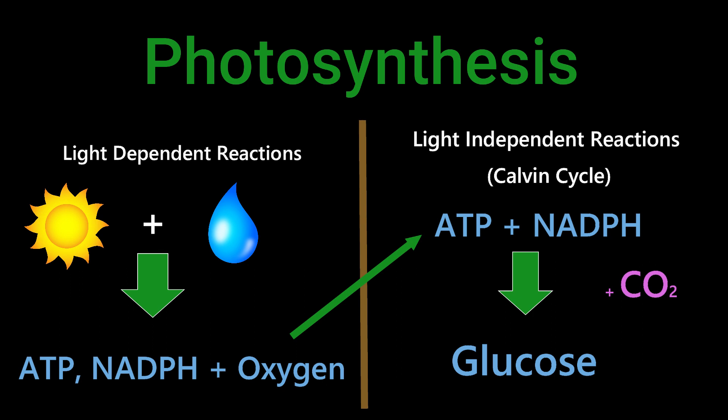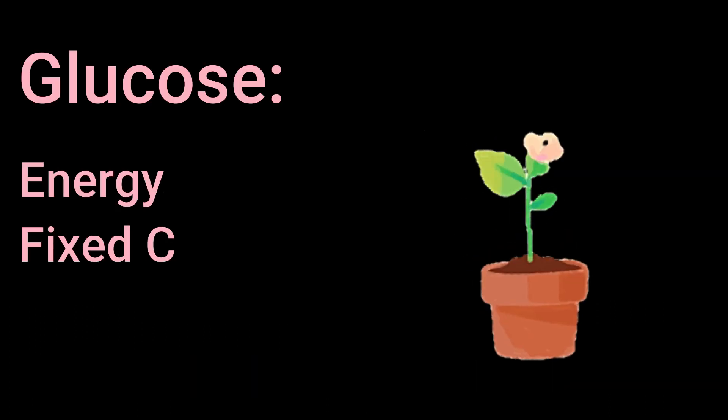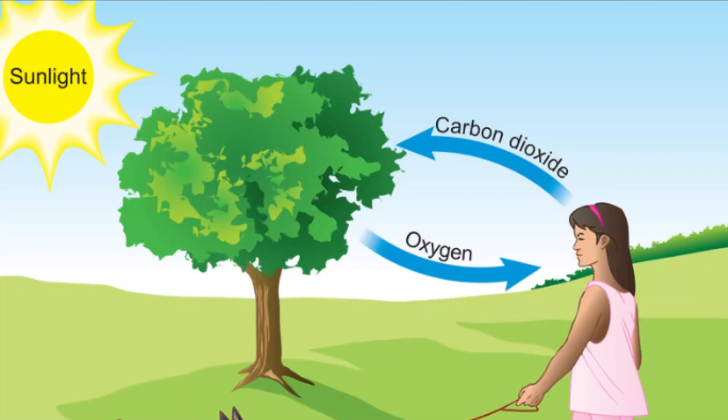Photosynthesis takes light energy and converts it into chemical energy in the form of glucose. Glucose provides the cell with energy as well as fixed carbons that plants can use for many biological purposes, including growth. During photosynthesis, plants produce oxygen as a byproduct that humans breathe.